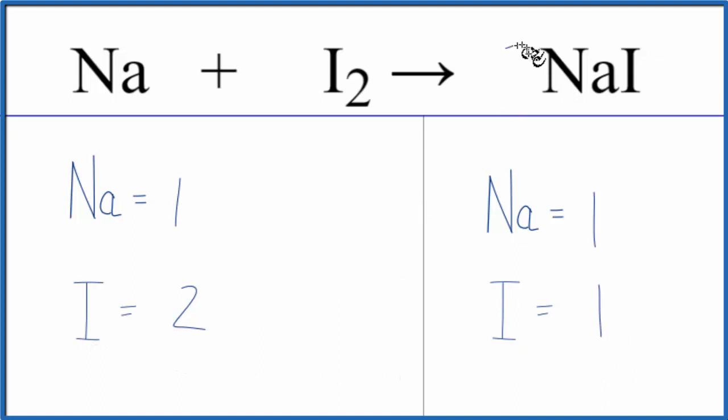If we put a coefficient of 2 in front of the NaI, we'll have 1 times 2, so we'll have two sodium atoms. The 2 applies to everything. We'll have 1 iodine times 2, so that'll give us two iodine atoms, so these are balanced.